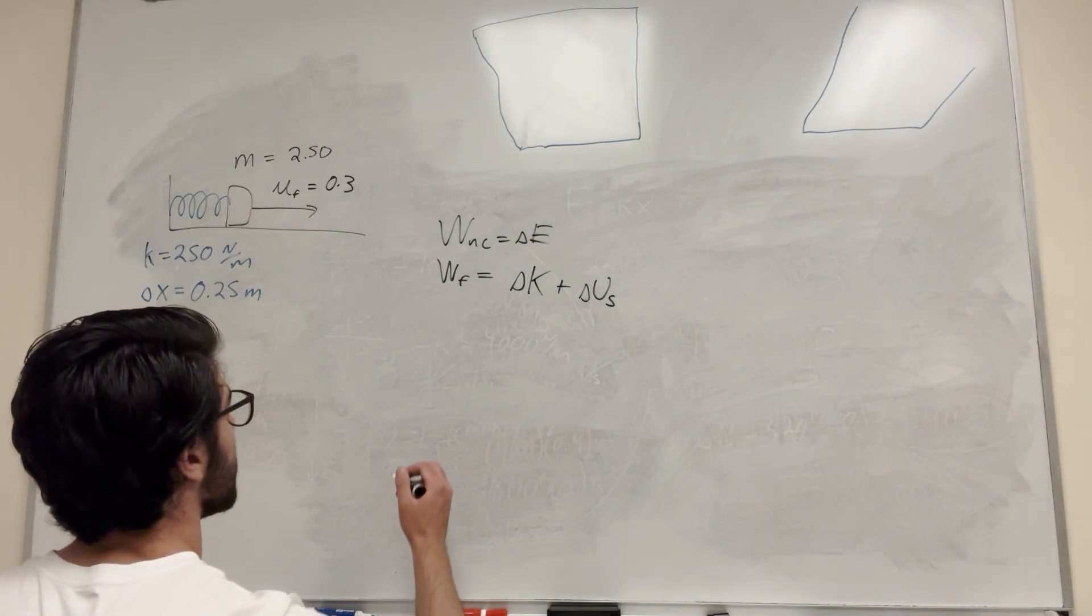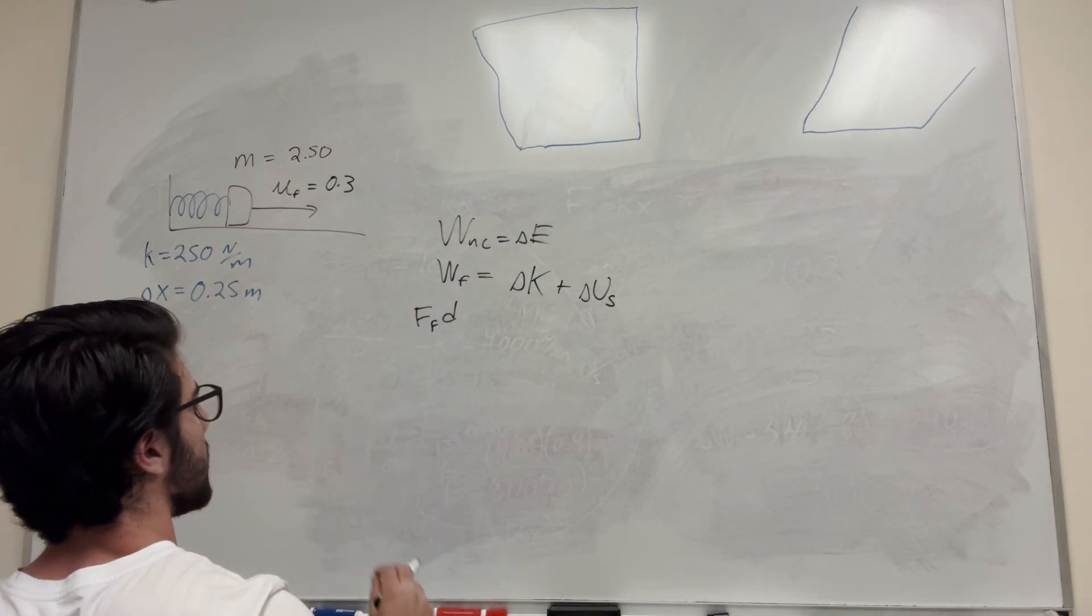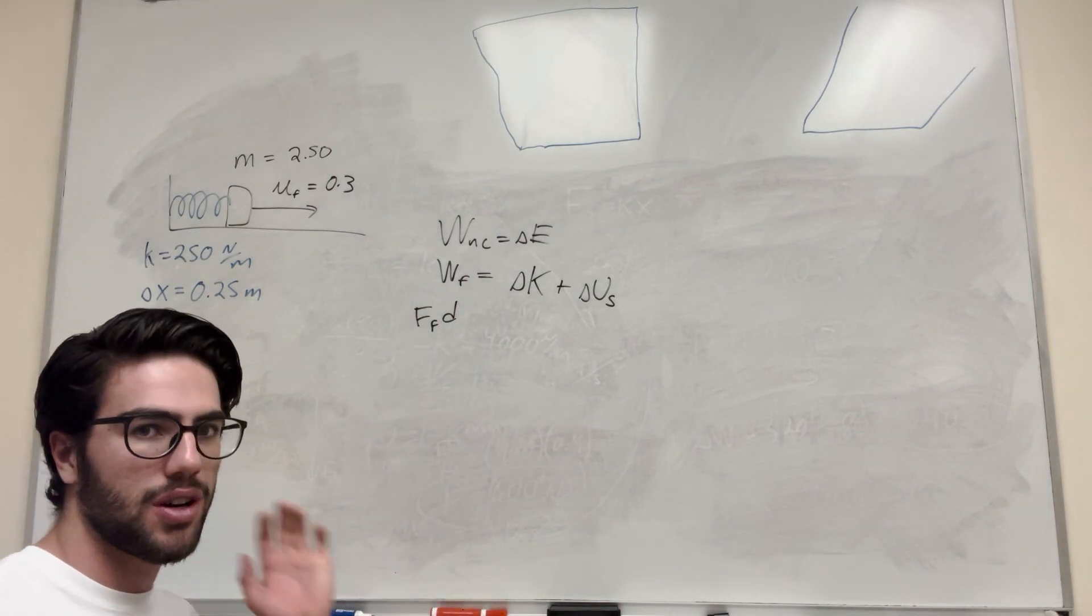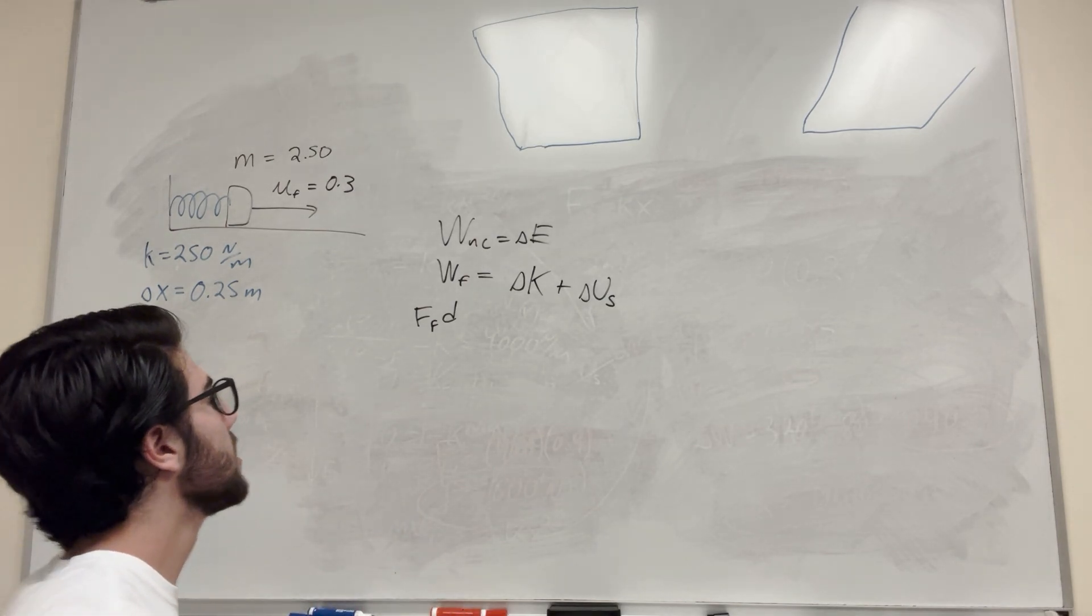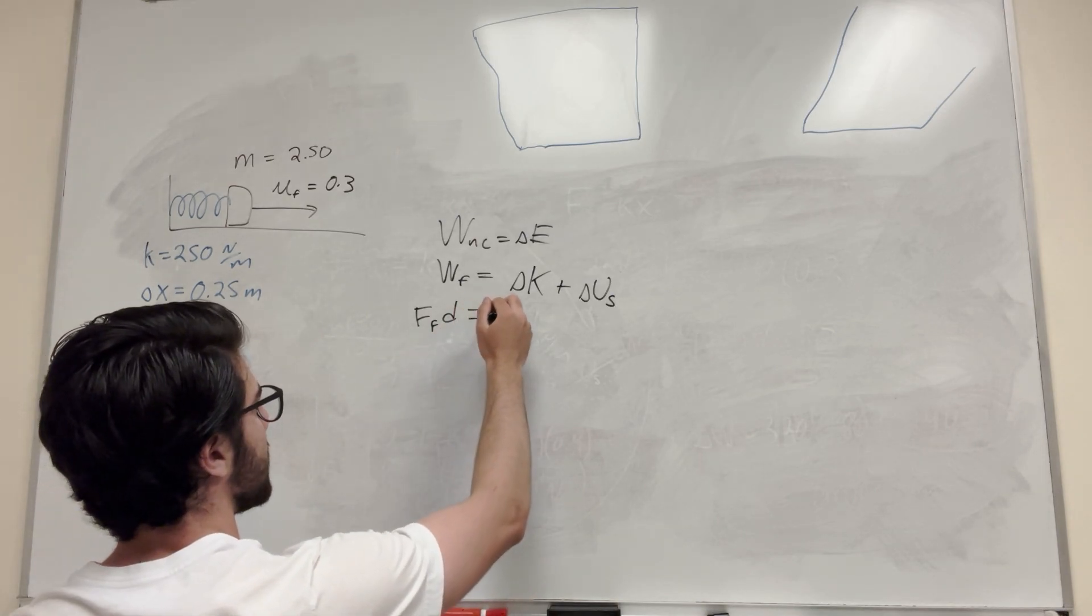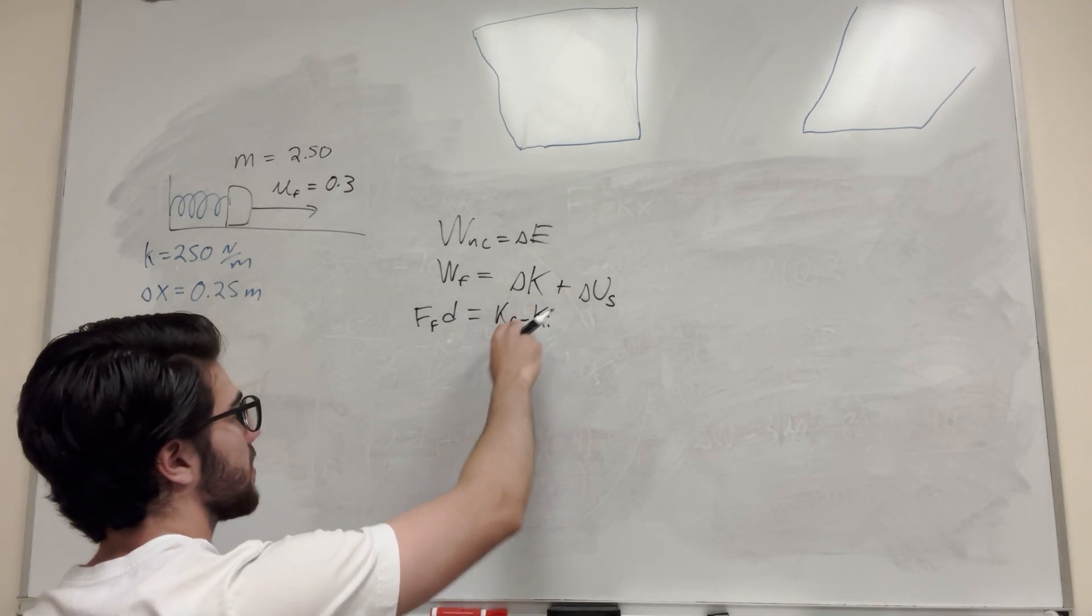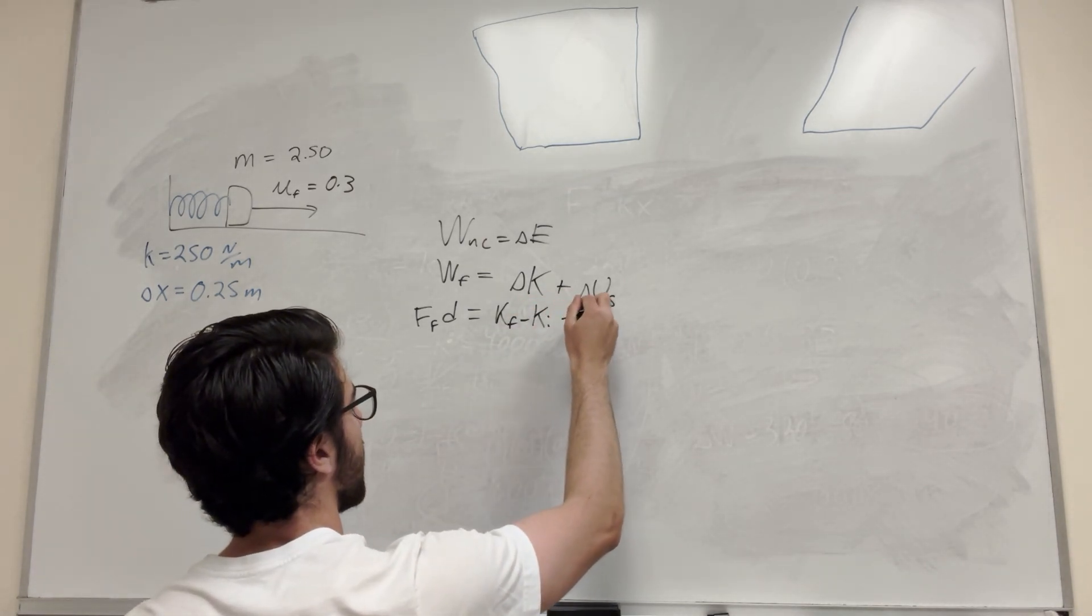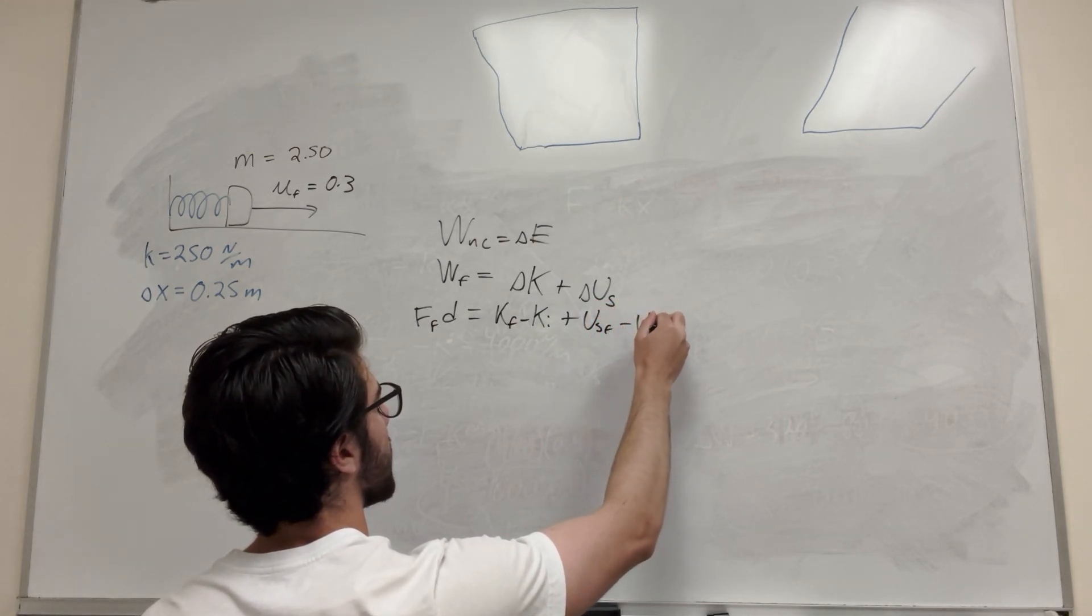So let's move on. So work of friction, that means force of friction times its distance. So that's just the expansion of work of friction, it's the force times distance. So that's perfect. Now we have our distance, which is what we're trying to find. So delta K, that means it's gonna be K final minus K initial. That's the definition of delta K is final minus initial, and then U spring final minus U spring initial.